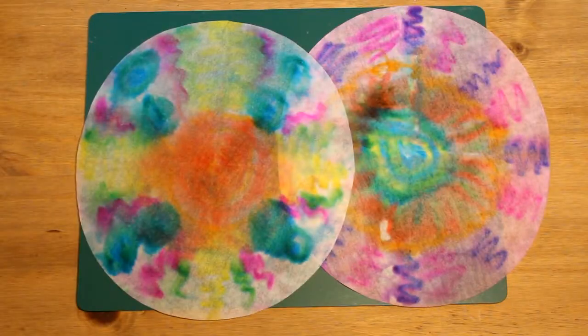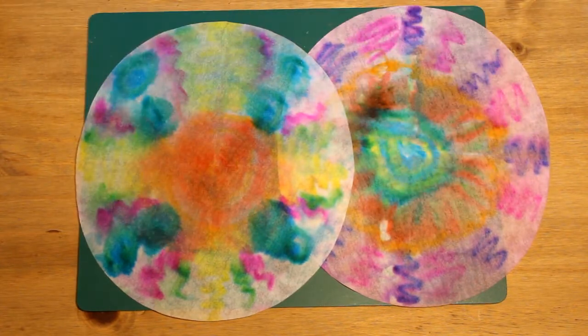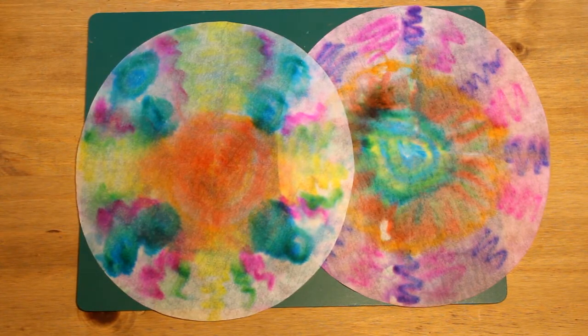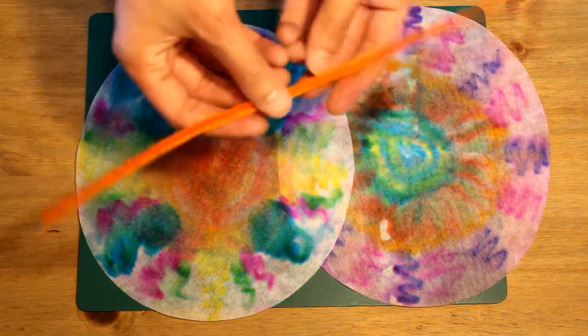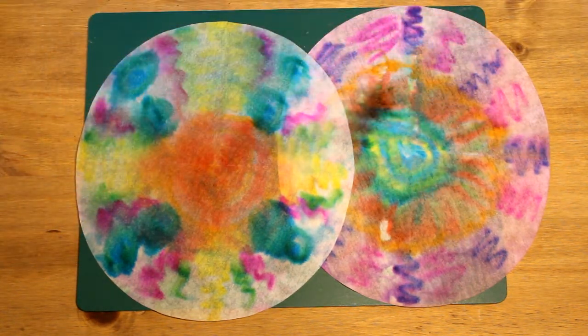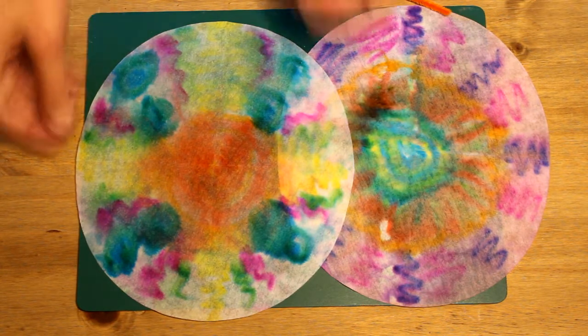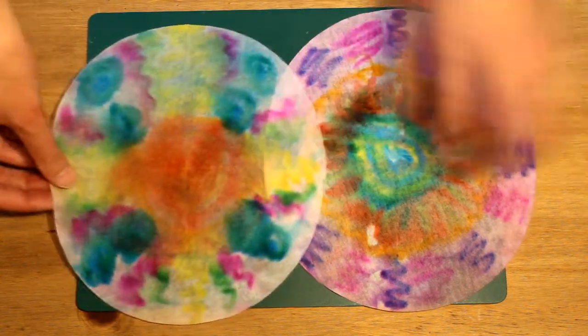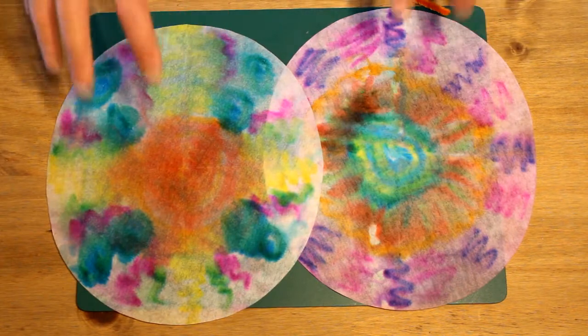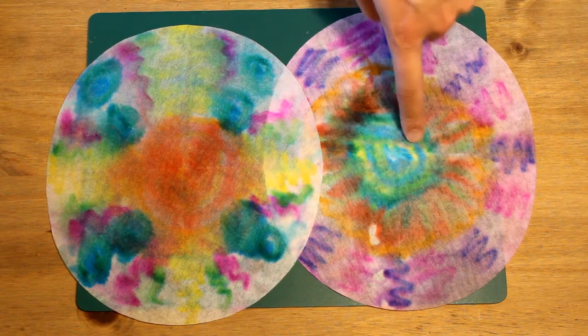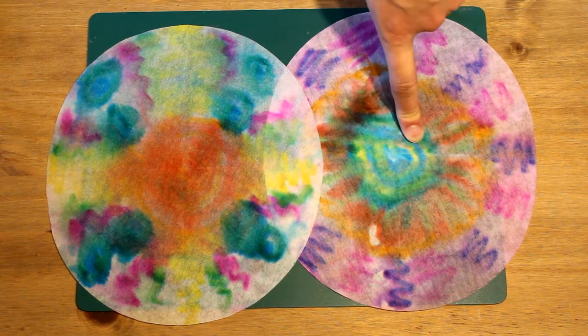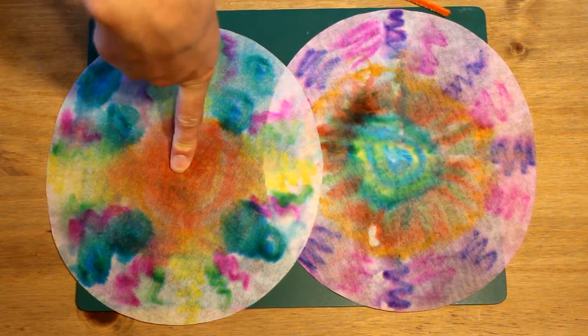Welcome back. So as you can see, I've dried both of my filters and they're ready to be made into butterfly wings. Now for this, I'm going to also need my bright pipe cleaner to be the antenna. Now the best way to do this is to decide which one you want as your top wing and which one you want as your bottom wing. I think I'm going to use this one as my bottom wing and this one as my top wing.